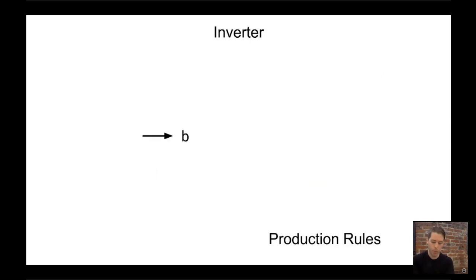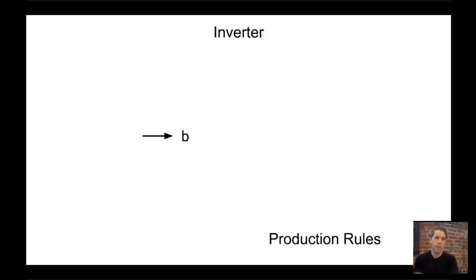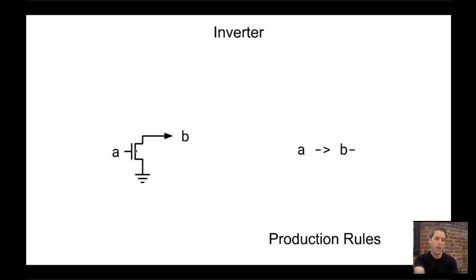Now we can use these devices to start creating digital logic. The first gate we want to produce is the inverter. It takes input A: if A is one, we invert its value to produce B, so if A is one then B is zero, and if A is zero then B is one. To do this, we start with an NMOS transistor. When A is one, the switch is closed and the channel is connected, connecting B to ground and pulling B down to zero. In code we represent this as: if A, then B is pulled down.